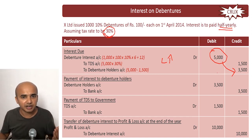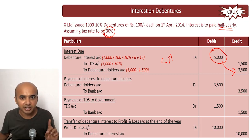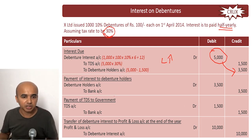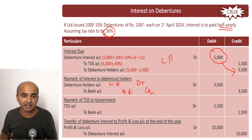Once we create the due entry, the next entry is payment. Debenture holders will receive rupees 3,500 instead of rupees 5,000, because rupees 1,500 is the TDS deducted by the company. The entry is: debit debenture holders, credit bank — because asset is decreasing and the liability is getting decreased. Liability decreasing is debited, asset decreasing is credited.